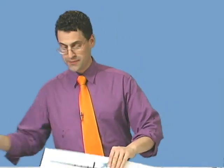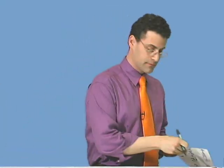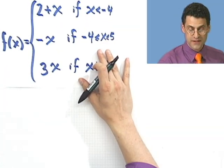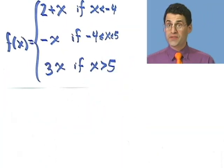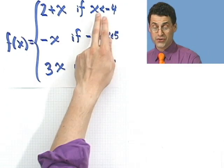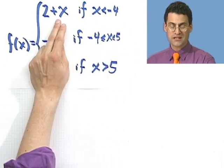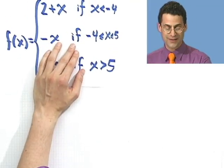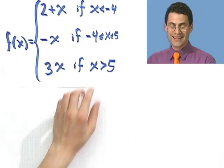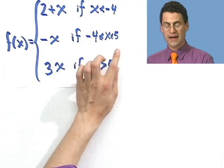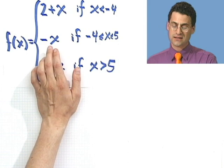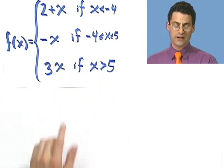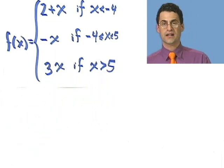Let's try one last one. This one's a really exotic one. This one's a triple action one. You equal one of three things depending where you are. If you're strictly smaller than negative 4, then you're 2 plus x. If you're between minus 4 and 5, then you equal negative x. And if you're bigger than 5, then you equal 3x. So what in the world does this look like? Well, now I have to graph three things separately and try to put them all on one axis. So let's see if we can do this.